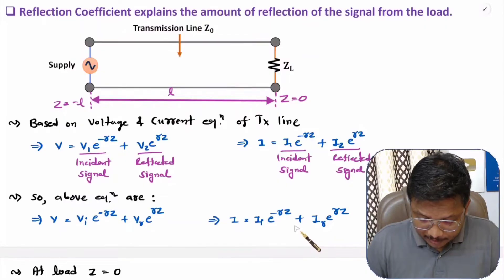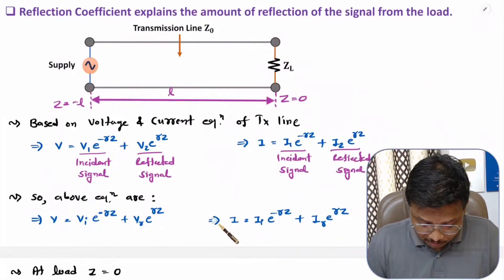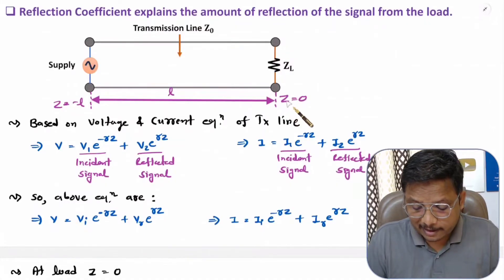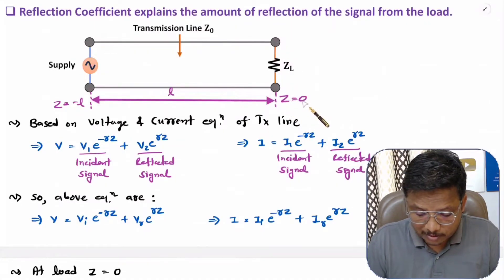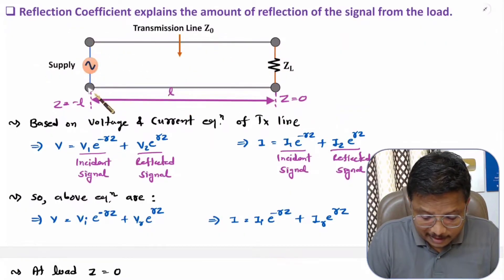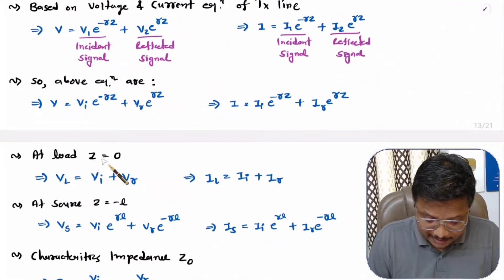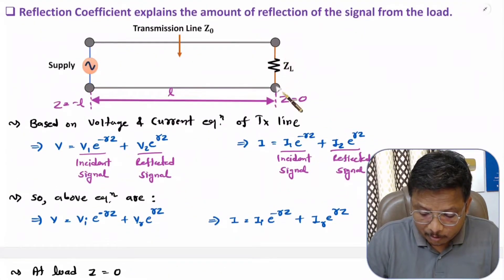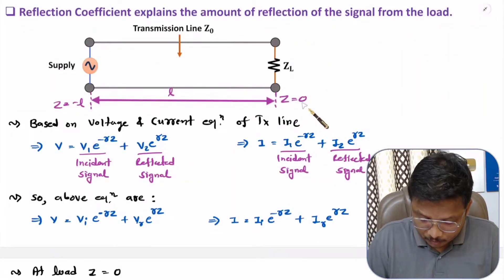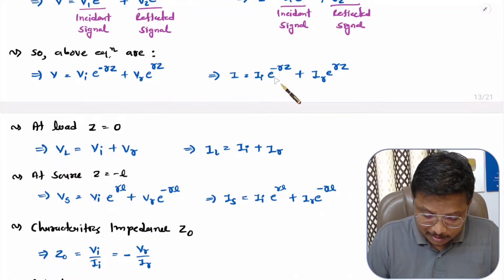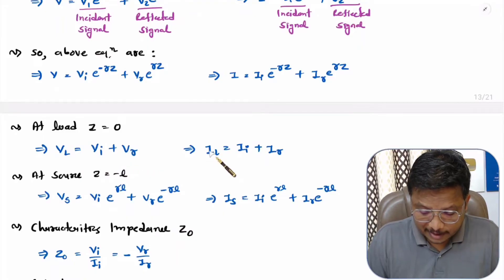With these equations, we will identify voltage and current at the load side and at the supply side. At the load we take the reference at z equals 0, and the length of the transmission line is L. Substituting z equals 0 gives us the load voltage and current: VL equals VI plus VR, and IL equals IR plus II.